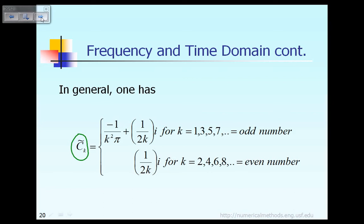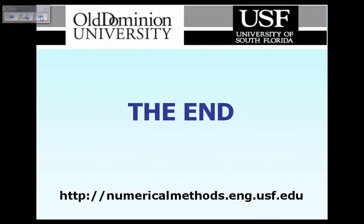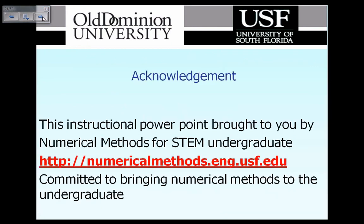C̃_k is equal to the first equation when k is an odd number: the index k becomes k squared for the real part denominator, and the denominator of the imaginary part is doubled to become 2k. On the other hand, when k is an even number, the real portion of C̃_k is 0, and the denominator of the imaginary part is again doubled. This compact formula gives the same answer for C̃_1, C̃_2, through C̃_8. And that is the end of this lecture. We'll see you in the next lecture. Thank you.